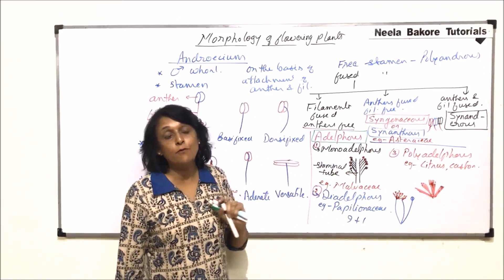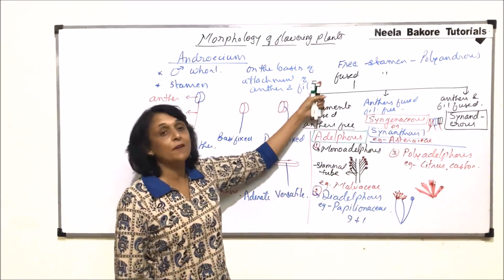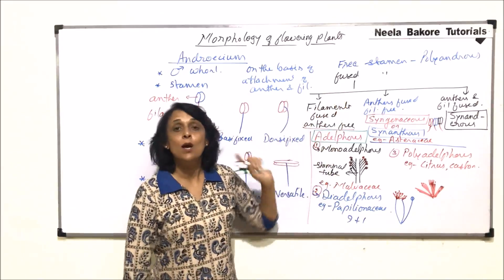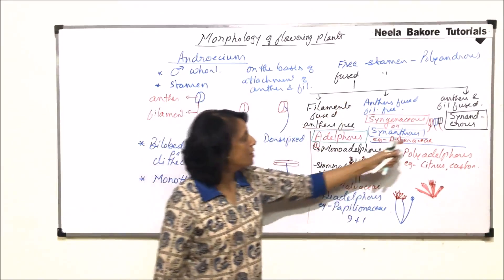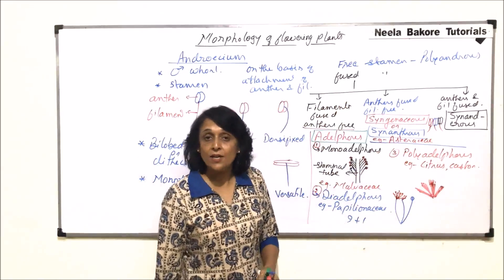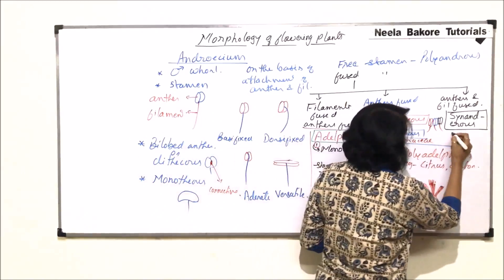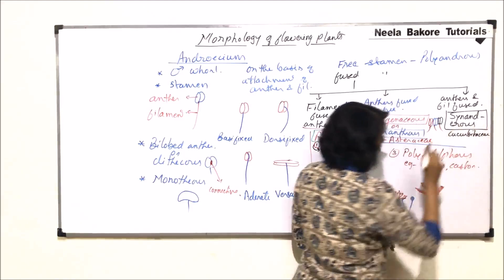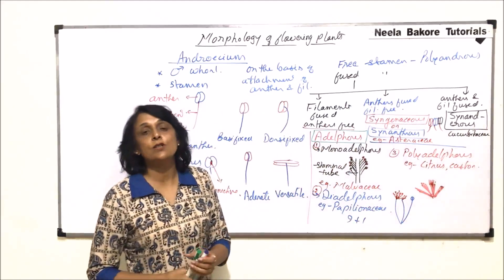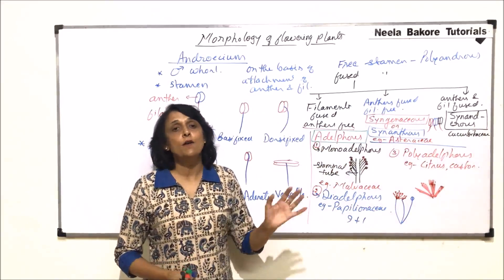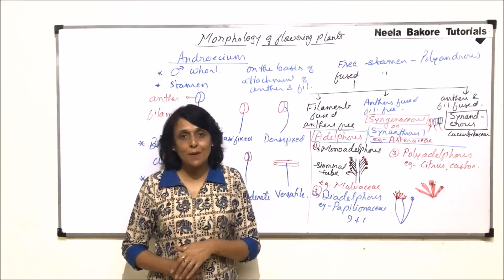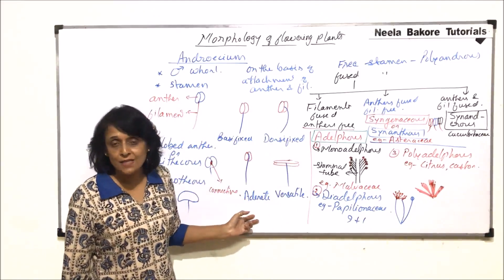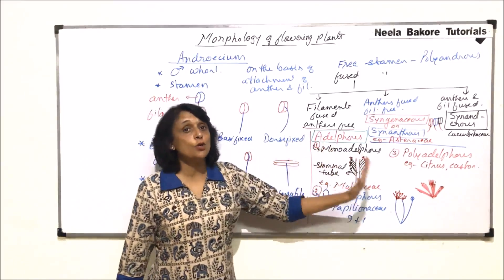If all filaments and anthers remain free, it is called the polyandrous condition. The synandrous condition — where the entire androecium is fused — is seen in the Cucurbitaceae family. These conditions are also characteristic features of different plant families, so it is easier to remember them that way. So we have classified stamens both attachment-wise and fusion-wise.